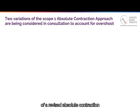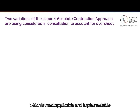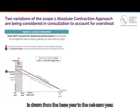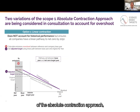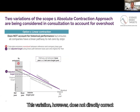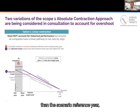There are two variations of a revised absolute contraction method being proposed in the standard, with the aim of testing which is most applicable and implementable via the consultation. The first option ensures that regardless of historical emissions, a linear Scope 1 emission reduction pathway is drawn from the base year to the net zero year. This proposal represents only a slight revision to the existing absolute contraction approach and ensures that companies always have a target-setting path to net zero by 2050. Future ambition rates are determined by the level of performance in the previous target cycles. This variation, however, does not directly correct for potential carbon budget overconsumption caused by having a later base year than the reference year, or correct for underperformance in the previous target cycle.